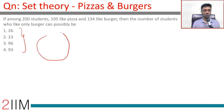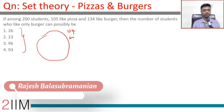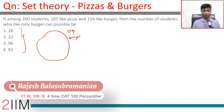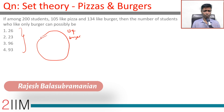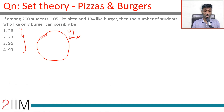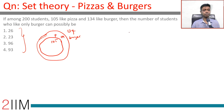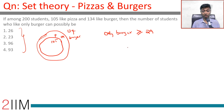134 people like burger. To find the minimum of those who like only burger, as many of the 134 as possible should also like pizza — in other words, pizza should sit inside burger. This difference is 29, so only burger should be 29 or more.